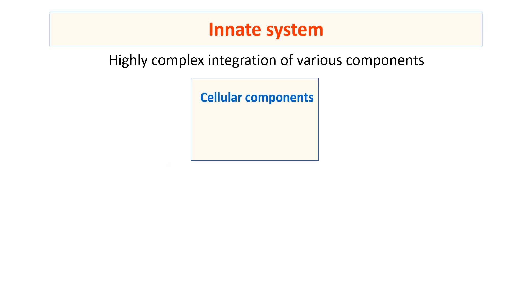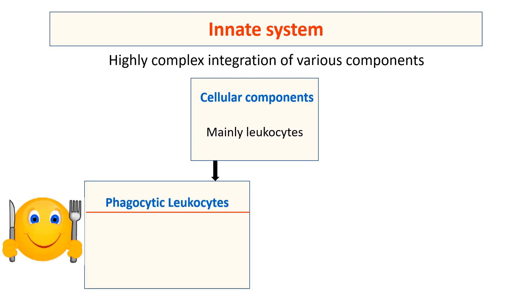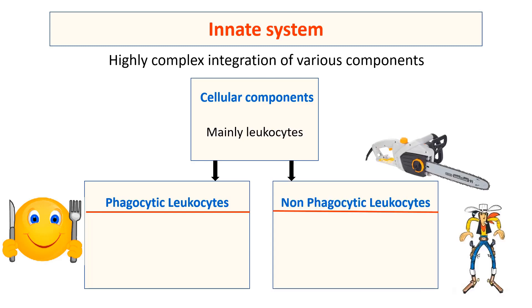The cellular components of the innate immune system consist mainly of leukocytes, which are divided into either phagocytic leukocytes or non-phagocytic leukocytes. The phagocytic leukocytes include dendritic cells, neutrophils, and macrophages.